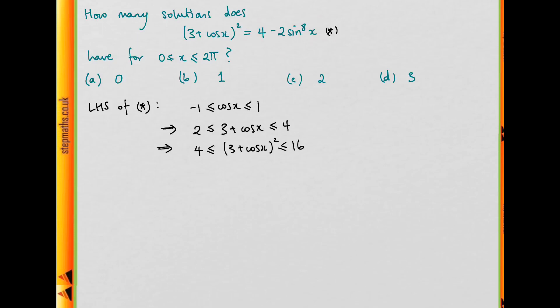If we look at the right-hand side, sin⁸x is going to be between 0 and 1, so 4 - 2sin⁸x is going to be between 2 and 4.